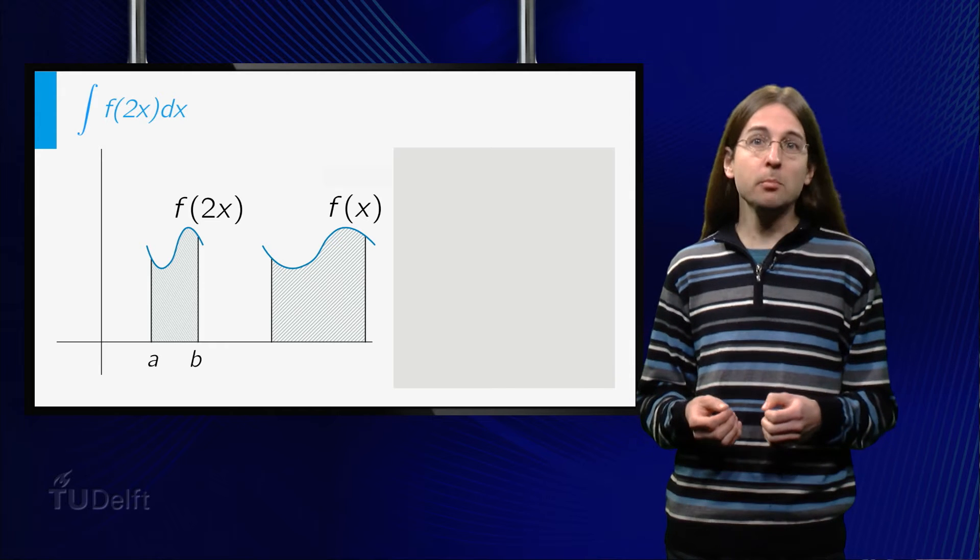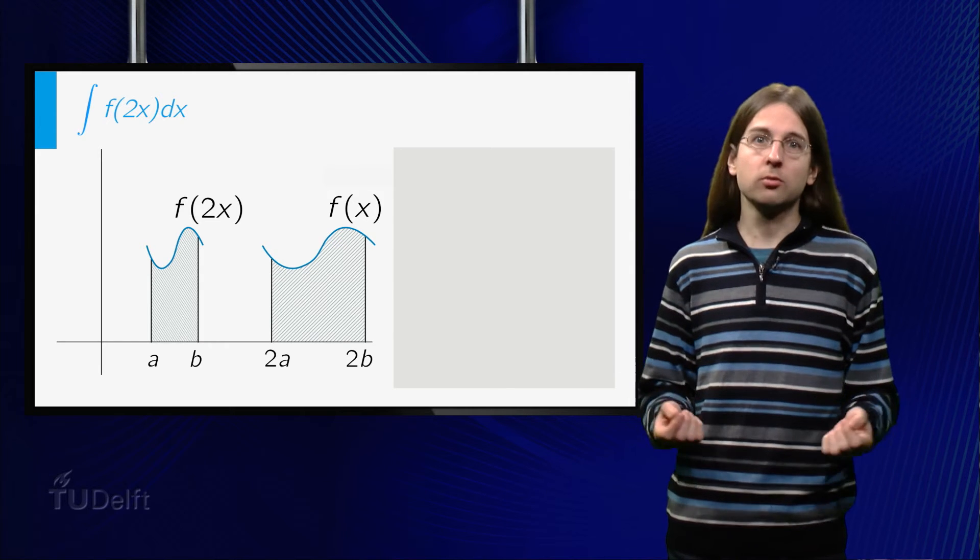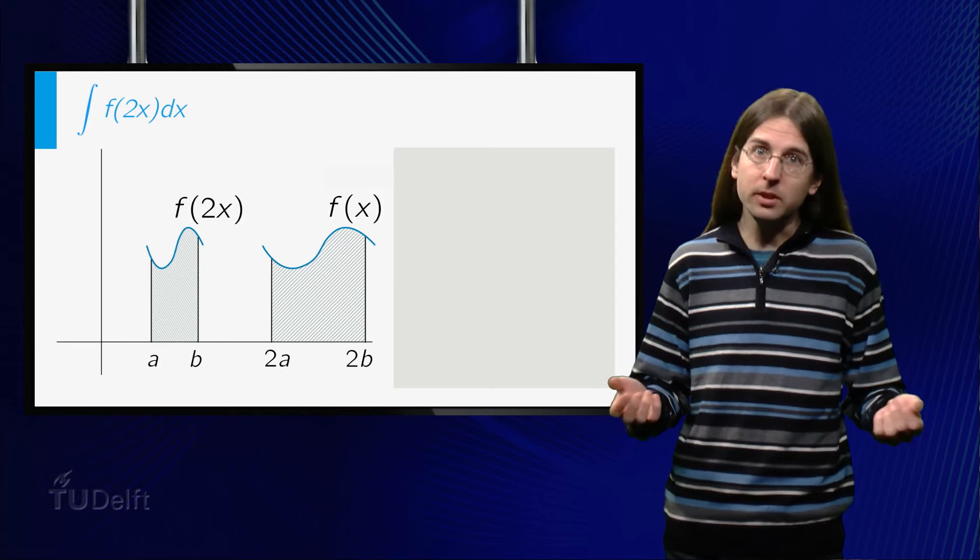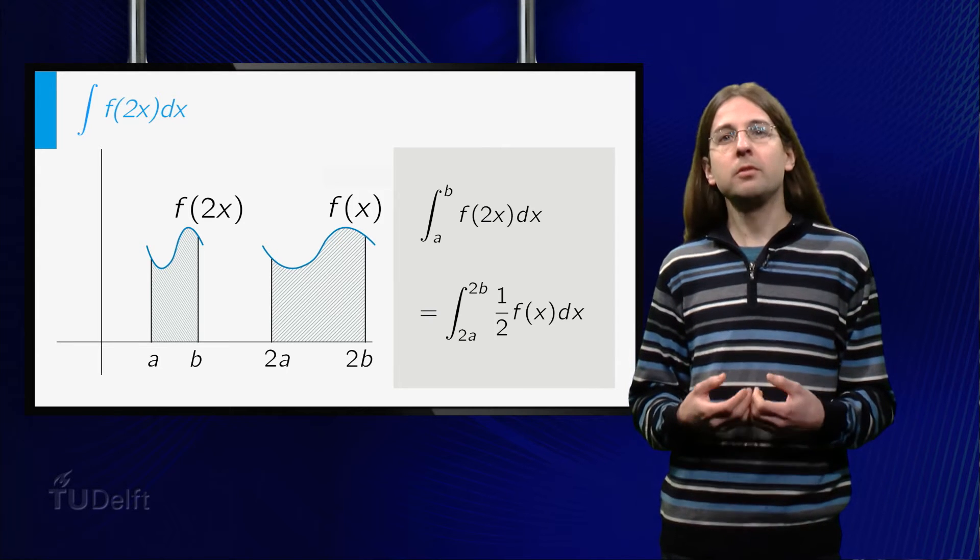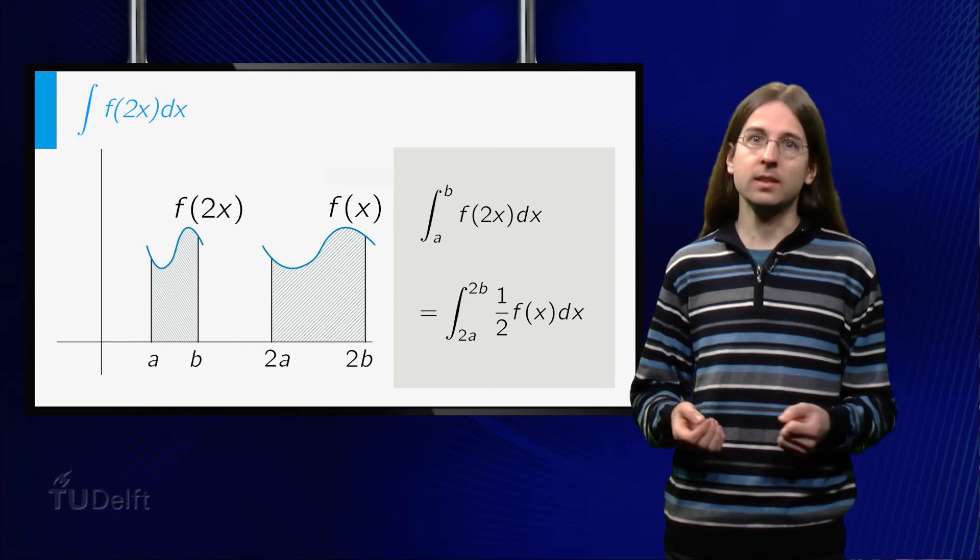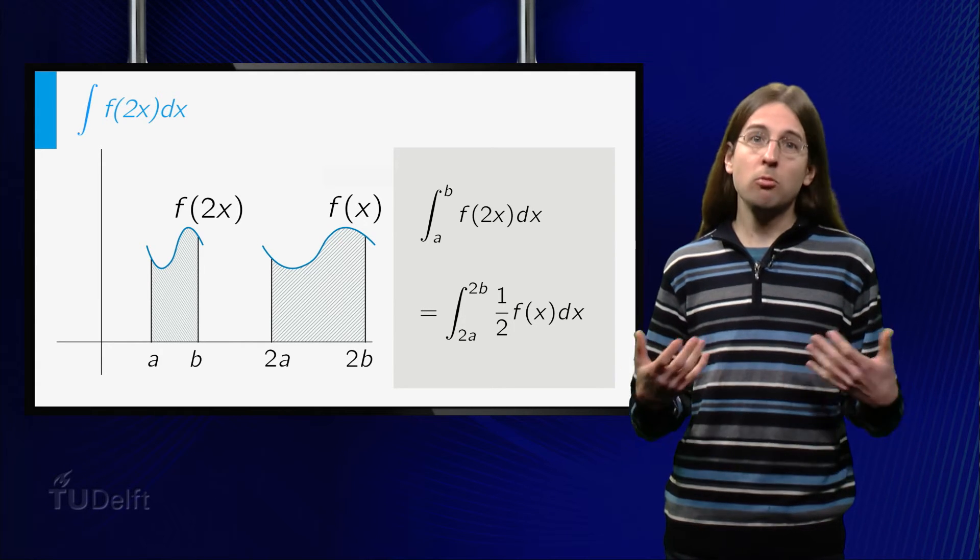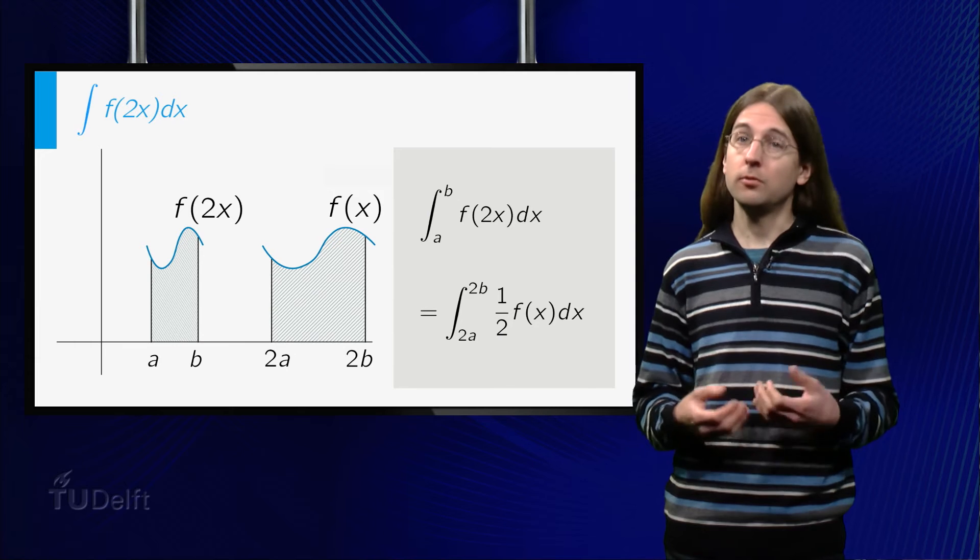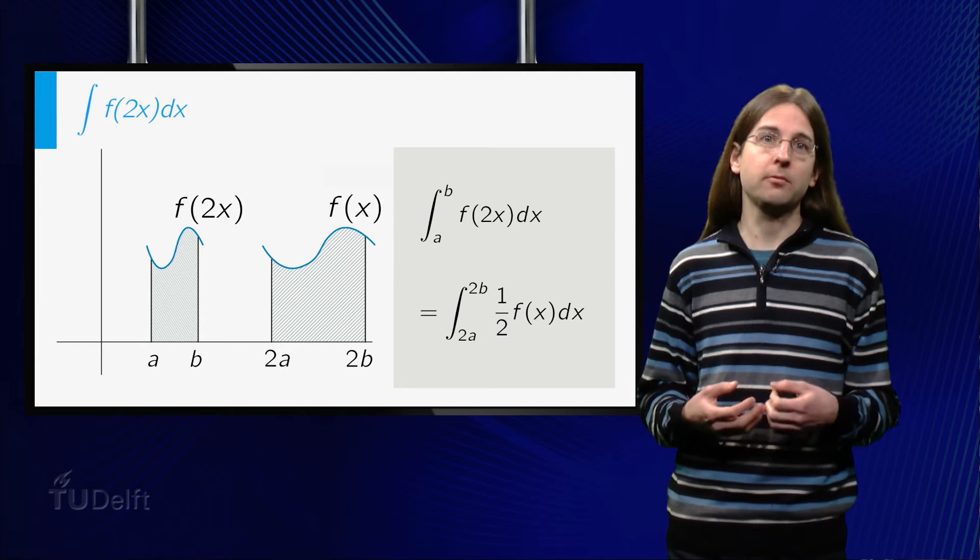If we call the new endpoints a and b, the old ones were therefore 2a and 2b. Thus we find that the integral from a to b of f of 2x dx equals one half of the integral from 2a to 2b of f of x dx.